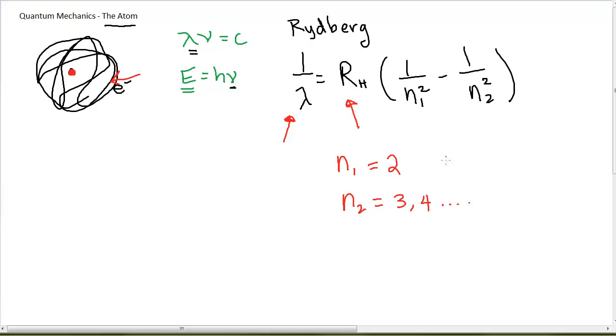And so this equation is called an empirical equation because it is based on figuring out from experiment what mathematical formula will give us those values. And that's exactly what he did. And everybody was like, oh my gosh, great, this works.